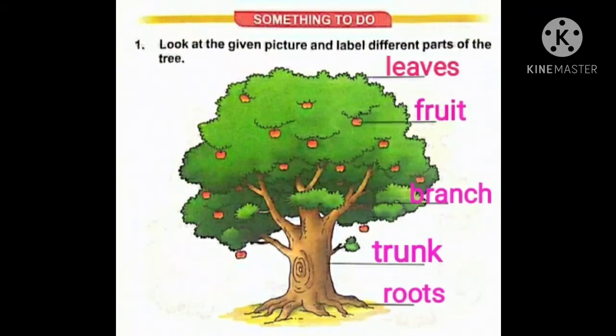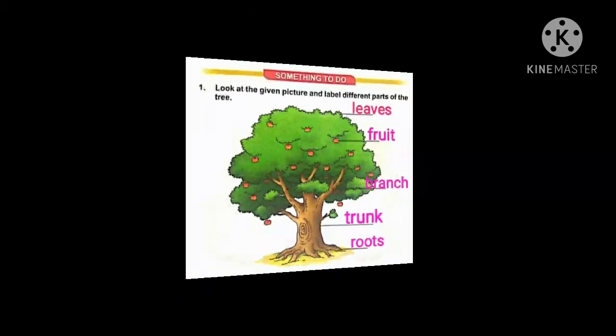So dear children, the five main parts of a tree are: leaves, fruit, branch, trunk, and roots.